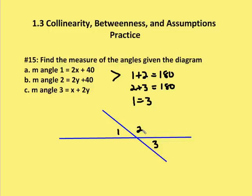Angles 1 plus 2 represent the creation of a straight line between two of its sides. So we can assume that this is a straight line here through these two points.